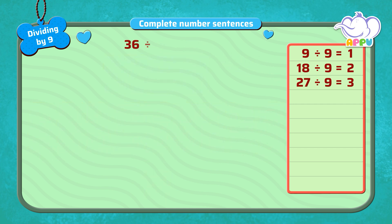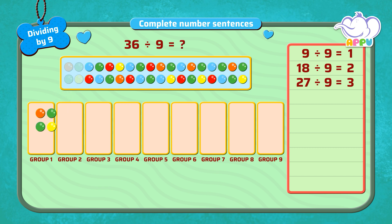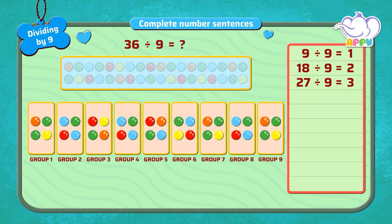What is 36 divided by 9? When we divide 36 beads equally into 9 groups, we get 4 beads in each group. So the answer is 4.